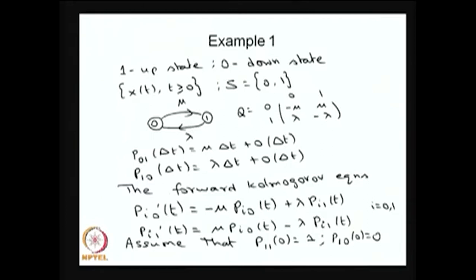This is the state transition diagram for the two-state CTMC. The corresponding Q matrix — the infinitesimal generator matrix — is a 2×2 matrix. The rate from state 0 to state 1 is mu, and the rate from state 1 to state 0 is lambda. The diagonal values are the negative sum of the other rates in that row, so the (0,0) entry is −mu and the (1,1) entry is −lambda.